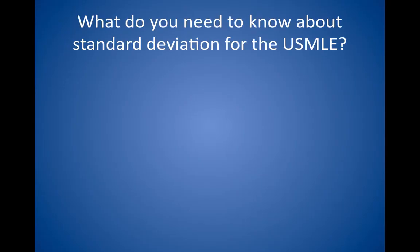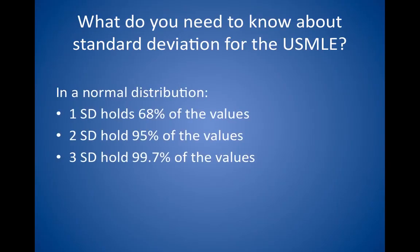What do you need to know about standard deviation for the USMLE? You need to know that with a normal or bell-shaped distribution, one standard deviation holds 68% of the values, two standard deviations hold 95% of the values, and three standard deviations hold 99.7% of the values.